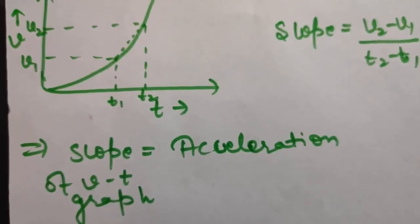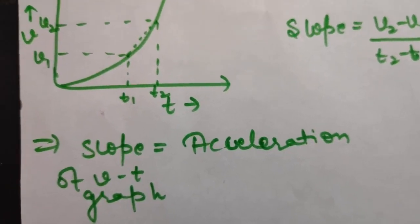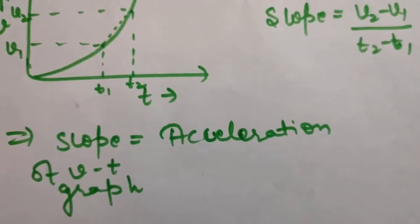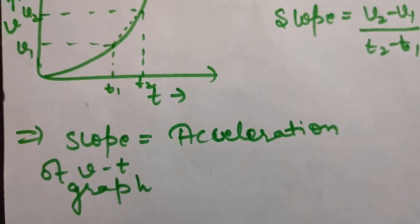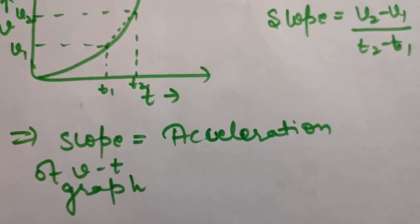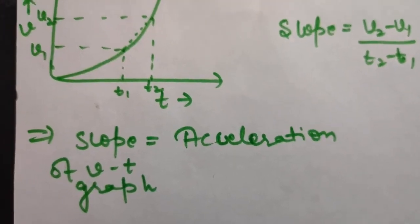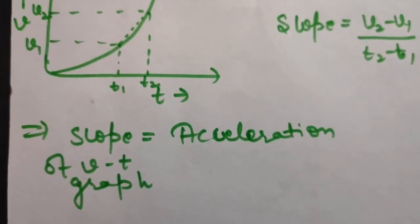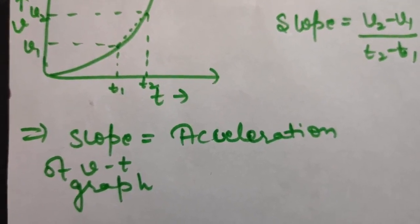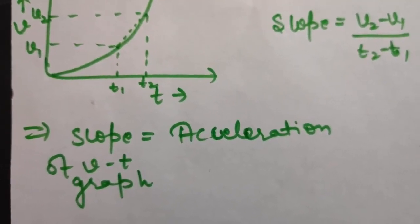To summarize three important results: the slope of a position-time graph gives velocity, the area under the velocity-time graph gives displacement, and the slope of the velocity-time graph gives acceleration. Remember these for your numericals.